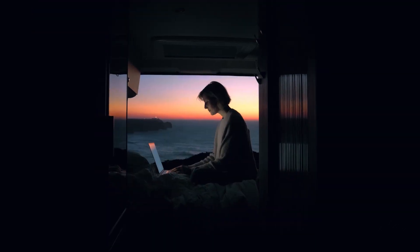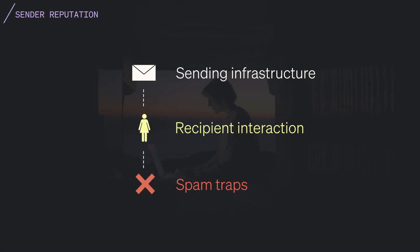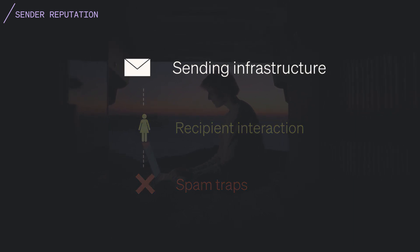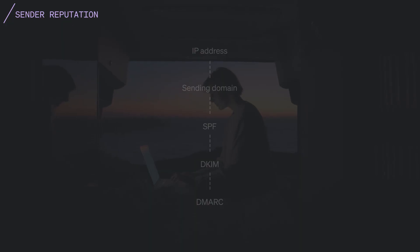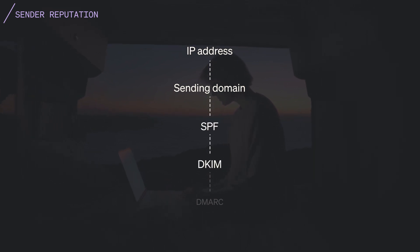Inbox providers decide where to place your message based on a variety of factors. The first is your sending infrastructure. Each component of your infrastructure verifies that you are who you say you are. This includes your IP address, sending domain, and authentication records such as SPF, DKIM, and DMARC.